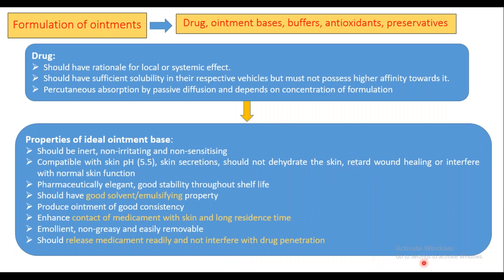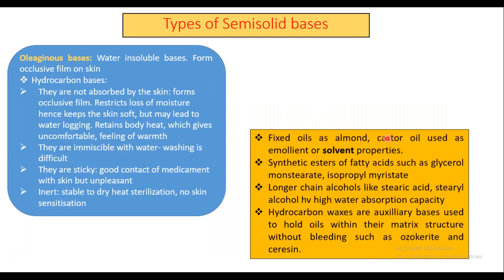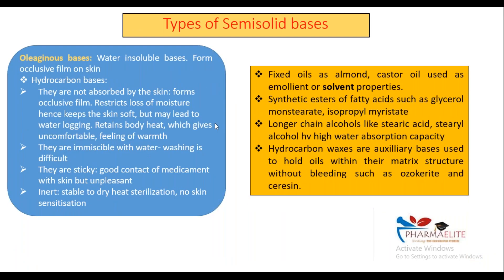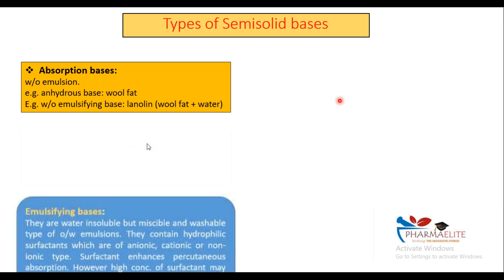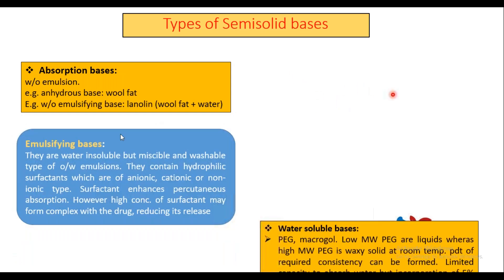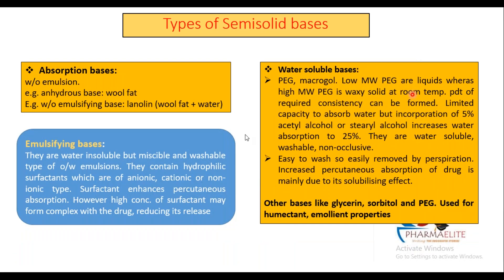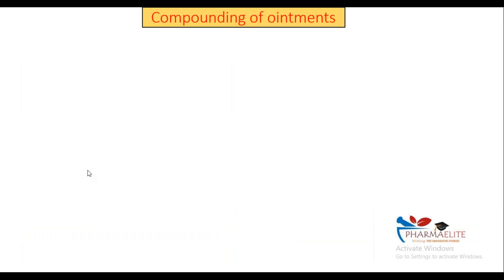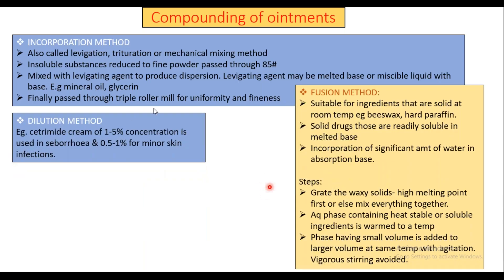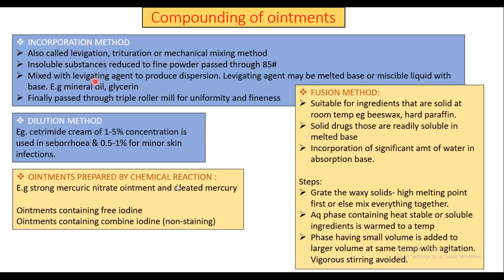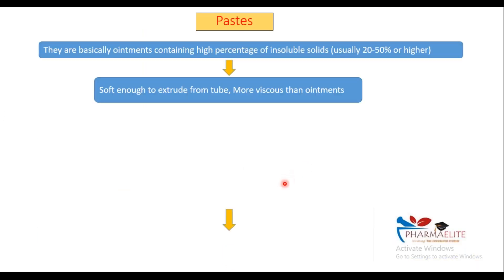Don't forget the skin pH, which is around 5.5, then the type of semisolid basis — don't forget them along with their examples. You can go through the earlier existing videos on compounding ointments. There are the incorporation method, fusion method, dilution, and ointments prepared by chemical reaction. Don't forget the example of levigating.